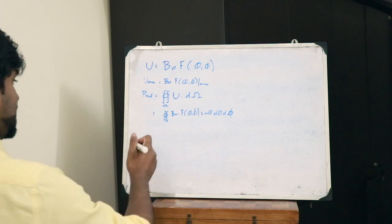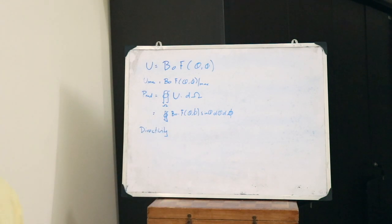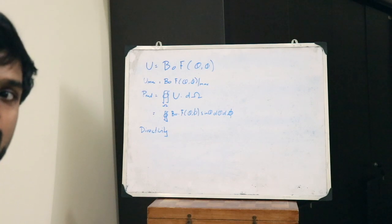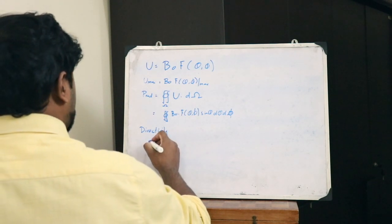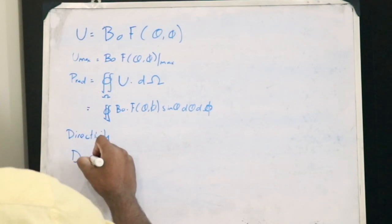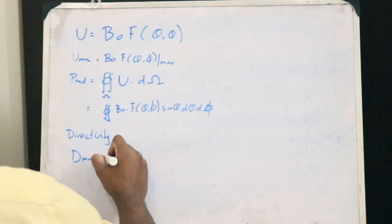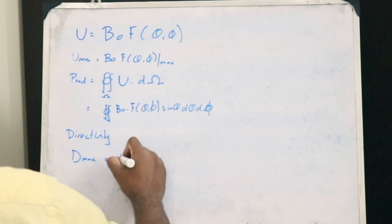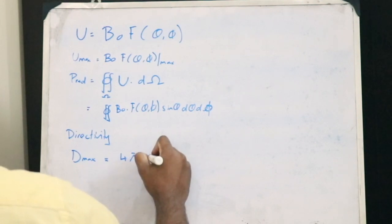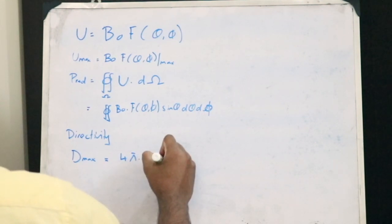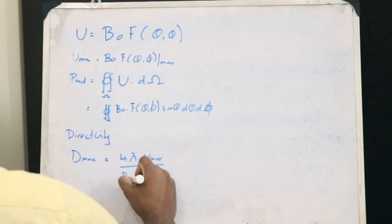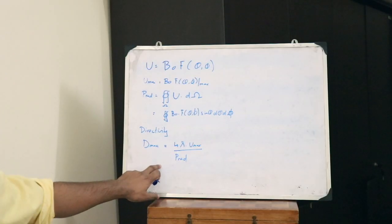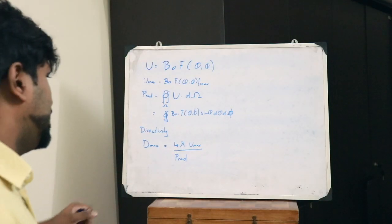Now, what is directivity? Directivity is how directional a particular antenna is. D_max is equal to 4π into U_max divided by the power radiated. This is the formula for directivity.